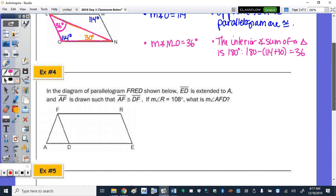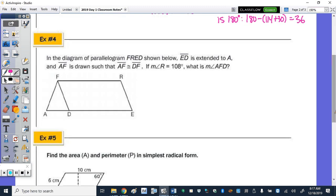Okay, number 4. We have parallelogram FRED. ED is extended to A, and AF is drawn such that AF is congruent to DF. So we have an isosceles triangle. If the measure of angle R is 108, what is AFD? So I'm trying to find this angle here, given that this angle is 108 degrees.